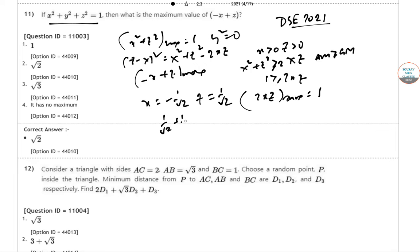So 1 by root 2, 2 by root 2, so root 2. And it happens when x equal to z equal to 1 by root 2. So that's it. This is the answer to this question. Let's proceed to the next one.